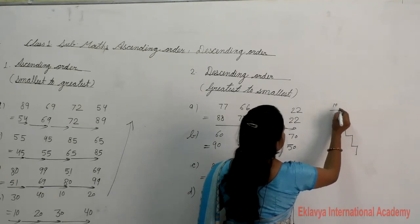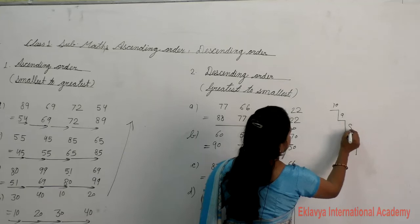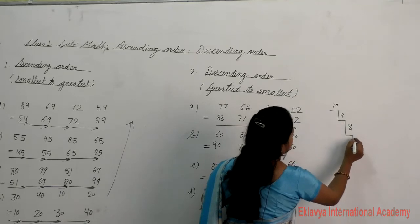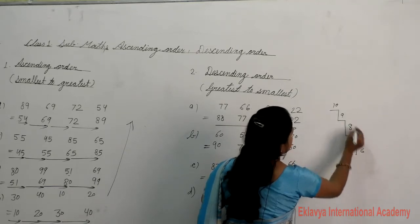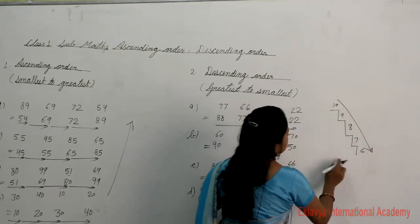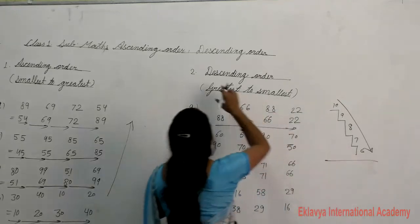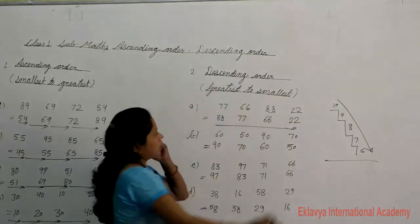For example: 10, 9, 8, 7, 6 — these are in descending order, going from greatest to smallest.